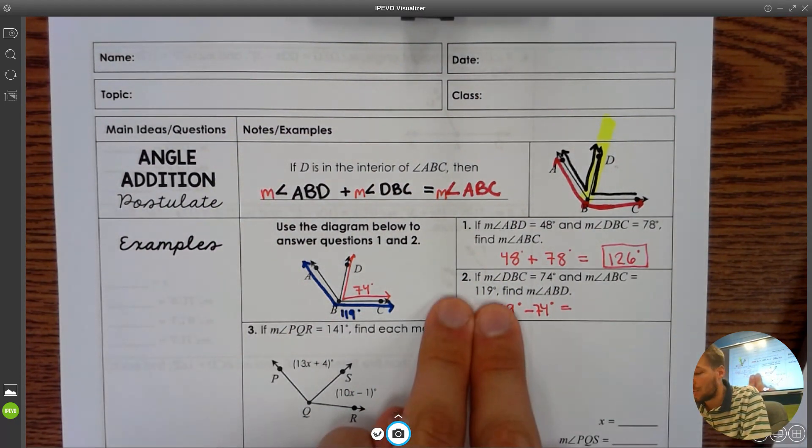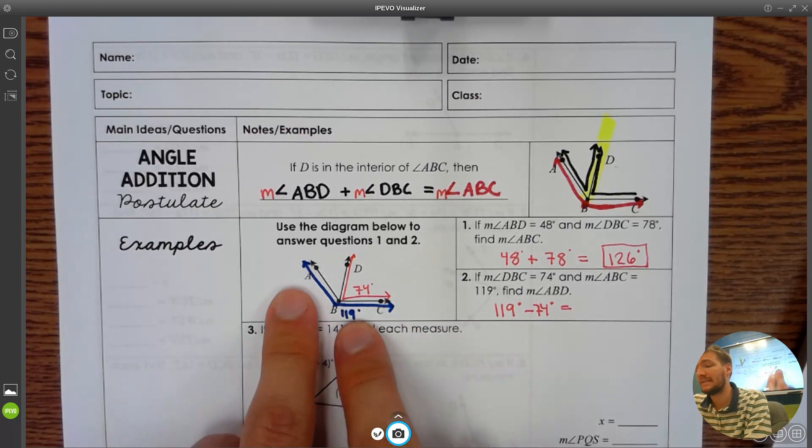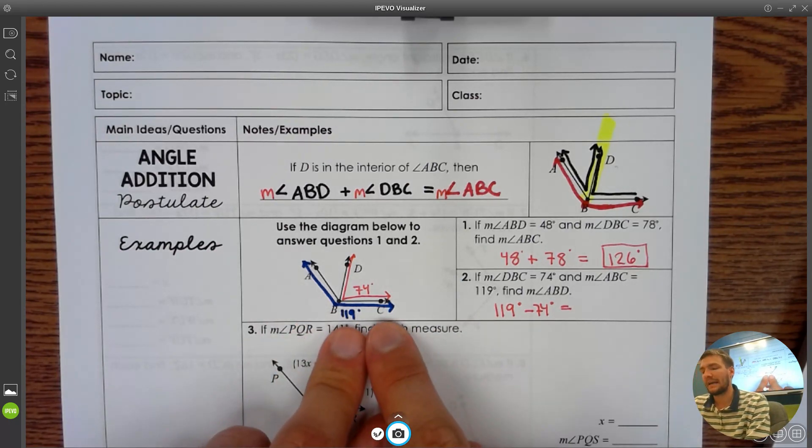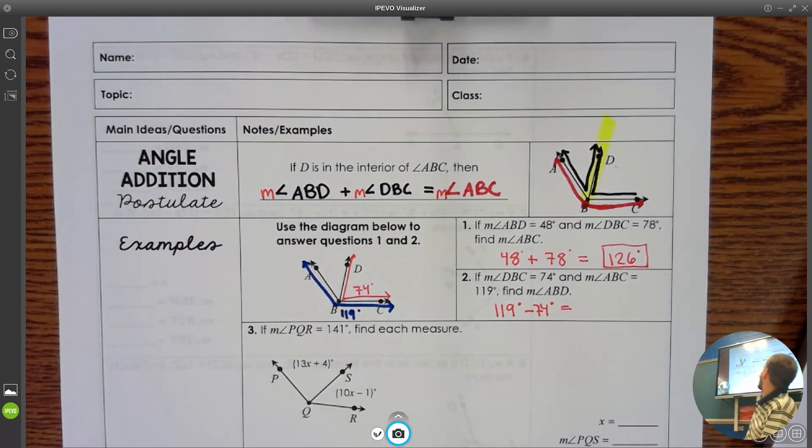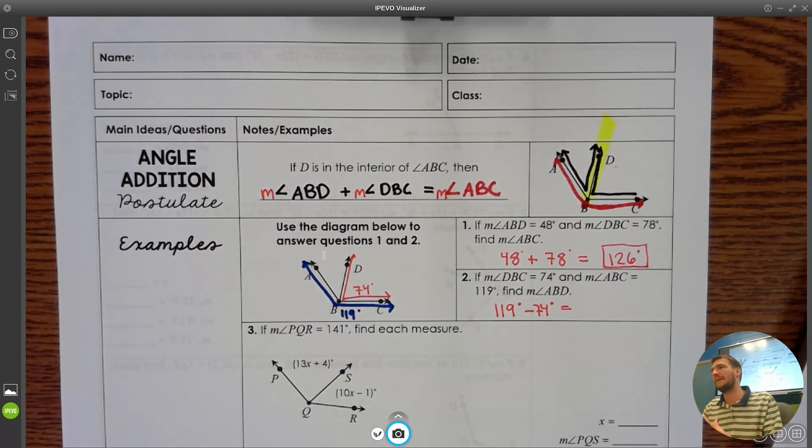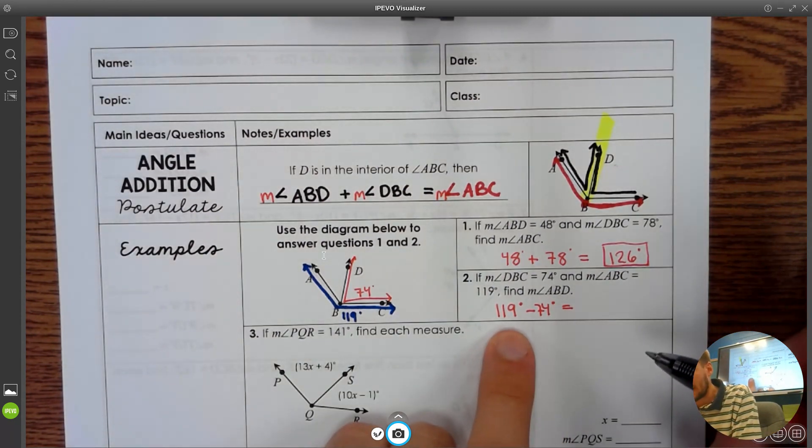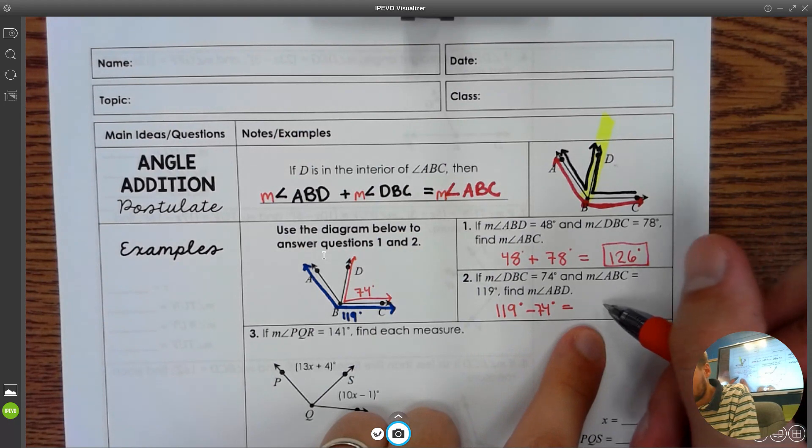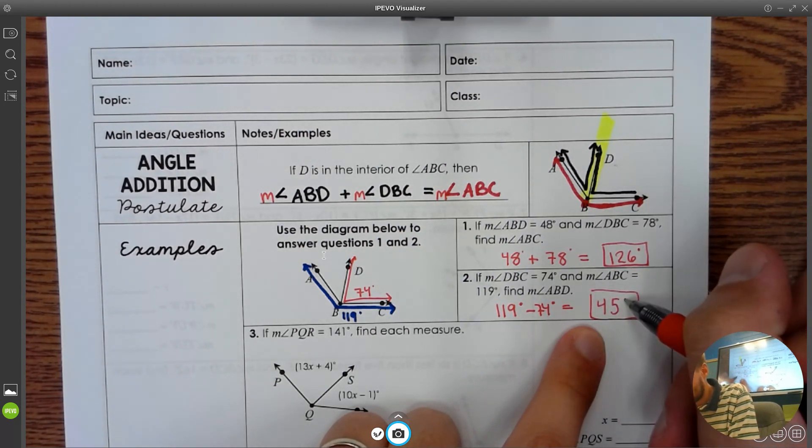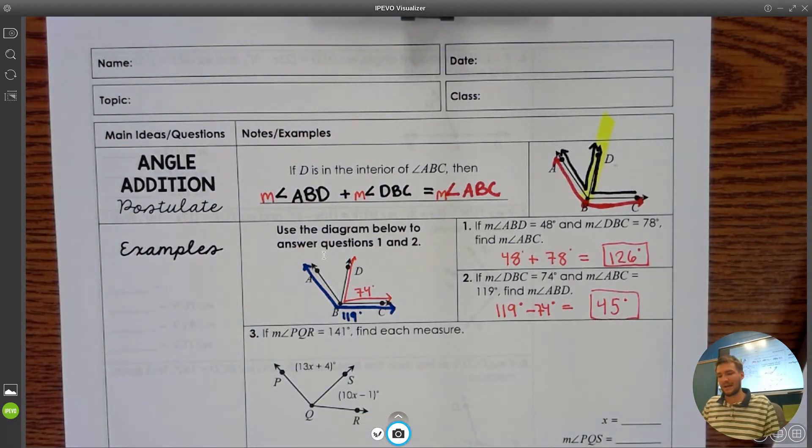For number two, it told us that ABC was 119. So there's no reason for us to add together 74 and 119, because that's not going to tell us what this small little extra piece is. If you've got the big one, you're going to need subtraction. If you don't have the big one, you're going to need addition. 119 minus 74 is 45 degrees. Easy peasy. A little addition, a little subtraction.